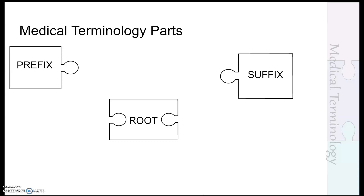Let's look at medical term parts. There are three components we're going to talk about, and I've got them drawn here as puzzle pieces. That's really because of the way these three fit together — you can have one root with different prefixes and suffixes that mean totally different things. If you have a different prefix and root but the same suffix, again a totally different word. So today we're really going to talk about the rules in general.